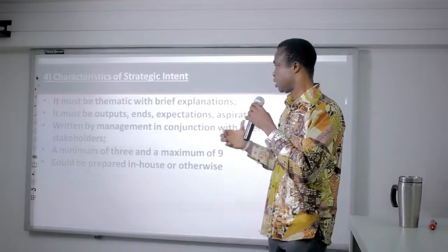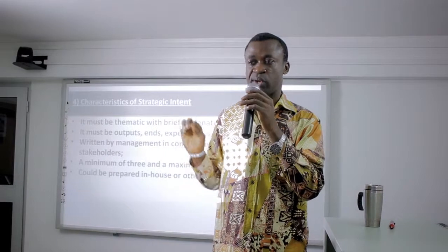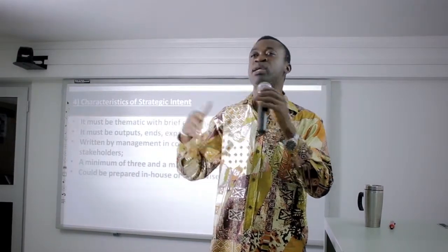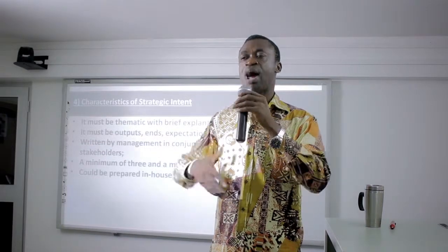Senior management must design this in conjunction with both internal and external stakeholders. It must have a minimum of about three and a maximum of nine. Strategic intent and priorities shouldn't be too many — we can have about two or three intents, but they have a strong ripple effect. If we achieve just one, the trickle-down effect will affect several aspects of the whole organization. Because of that catalyst effect, we don't need many intents or priorities — three, four, five, or at most nine.